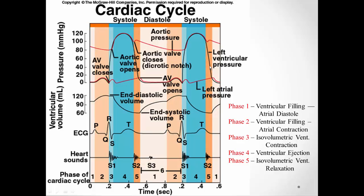During phase five, blood from the ventricles is at greater pressure than blood in the atriums, but blood can't go from the ventricle to the atrium because the AV valves are closed. Blood can't go from the atriums into the ventricles because atrial pressure is lower than ventricular pressure. So blood can't go anywhere — it's isovolumetric, and the volume stays the same, shown as a flat line on the graph. As soon as ventricular pressure drops below atrial pressure, we step back into phase one: ventricular filling begins again, and the whole cycle starts over.